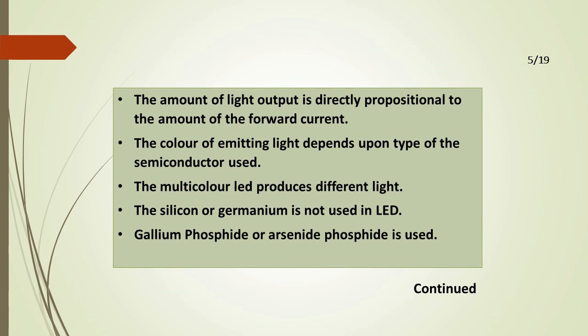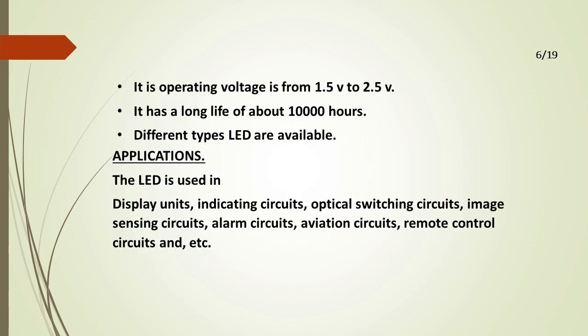The amount of light output is directly proportional to the amount of forward current. The color of emitting light depends upon the type of semiconductor used. The multicolor LED produces different light. Silicon or germanium is not used in LED. Gallium Phosphate or Arsenide Phosphate is used. Its operating voltage is from 1.5V to 2.5V. It has a long life of about 10,000 hours.